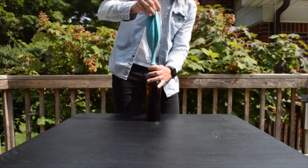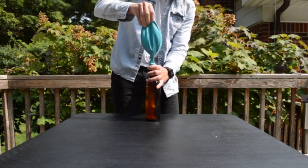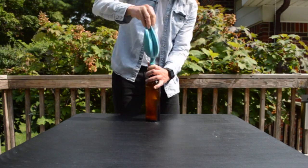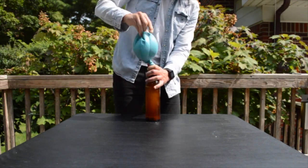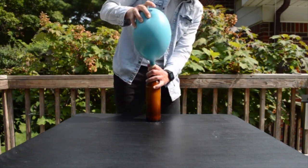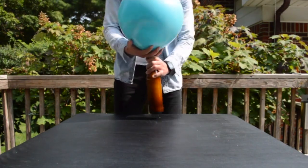If your balloon doesn't create a good seal, you can use an elastic band to create a better seal. It will probably bubble a lot and some of the vinegar might go up into the balloon. But that's okay because as the reaction slows down, it'll all drop back into the bottle.